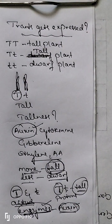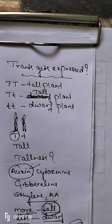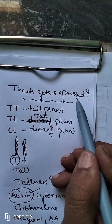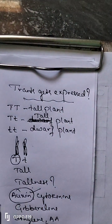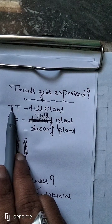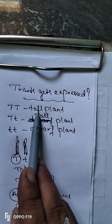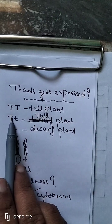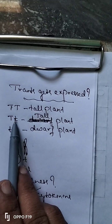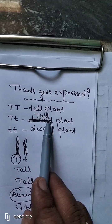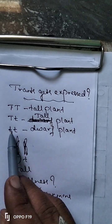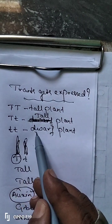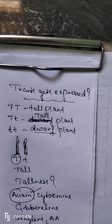Once again, I will explain how traits get expressed. If the two alleles are capital T and capital T, the plant grows as a tall plant. If one is capital T and another one is small t, again the plant grows as a tall plant. If both the alleles are small t, then the plant grows as a dwarf plant.